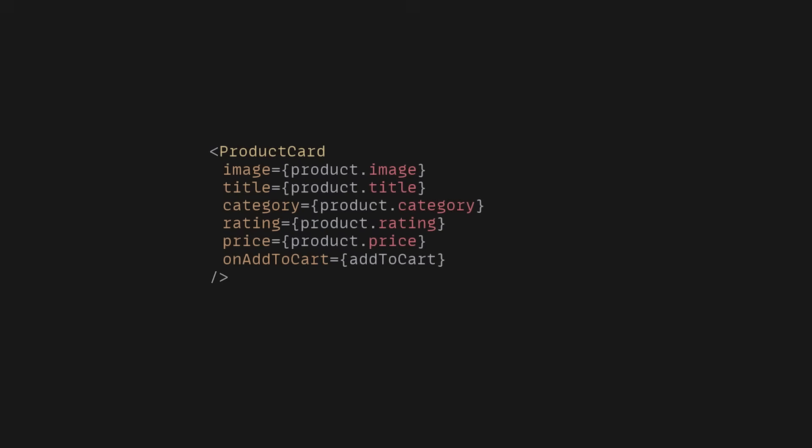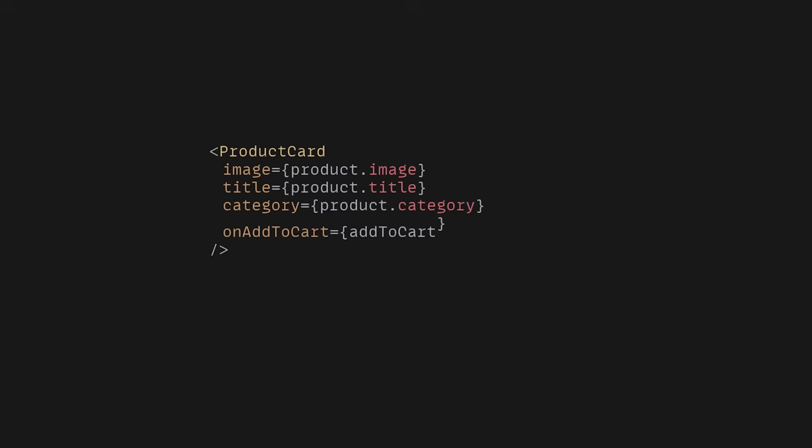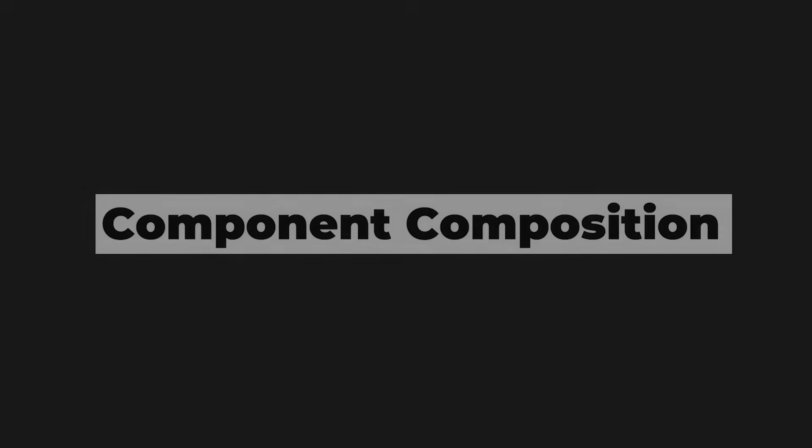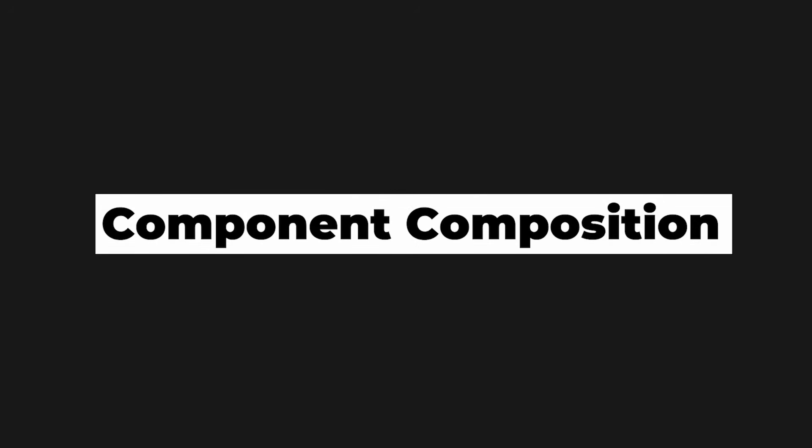Maybe we can pass the product parameters as separate props. This way we can omit some props when we want to hide parts of the component. That's fine, but it doesn't solve the root problem — this component is inflexible, so the list of props will inevitably grow to accommodate different use cases. And the worst part? You have to keep changing the product card code to simply extend it. What if there was a better way? There is, and it's called component composition.